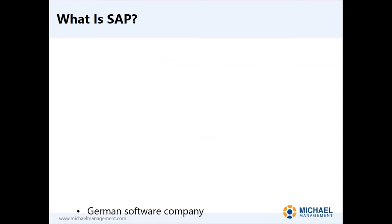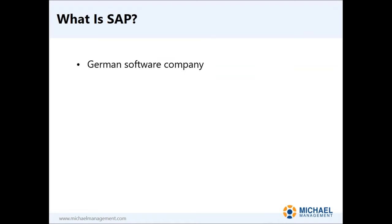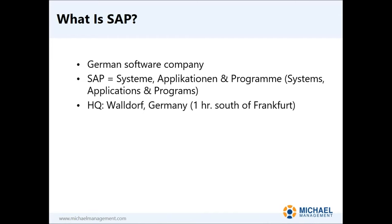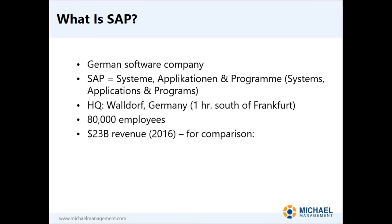SAP is a German software company. SAP is a German abbreviation — it stands for Systeme, Application, and Programme, or in English, Systems, Applications, and Programs. The company is headquartered in Waldorf, Germany, about an hour south of Frankfurt, right next to Heidelberg. This giant company is headquartered in a tiny little village. They have about 80,000 employees worldwide, and last year they made about $23 billion in revenue.